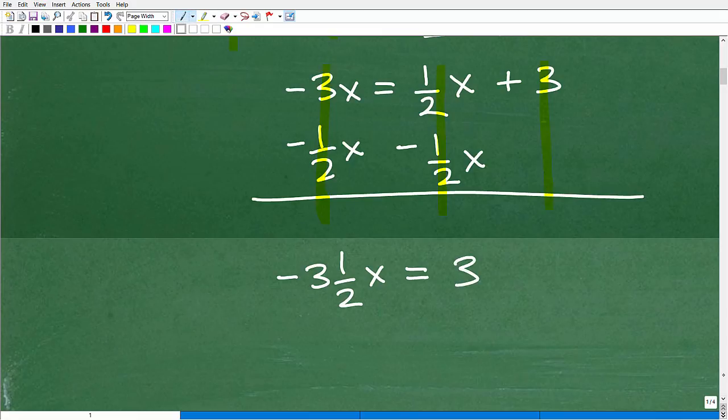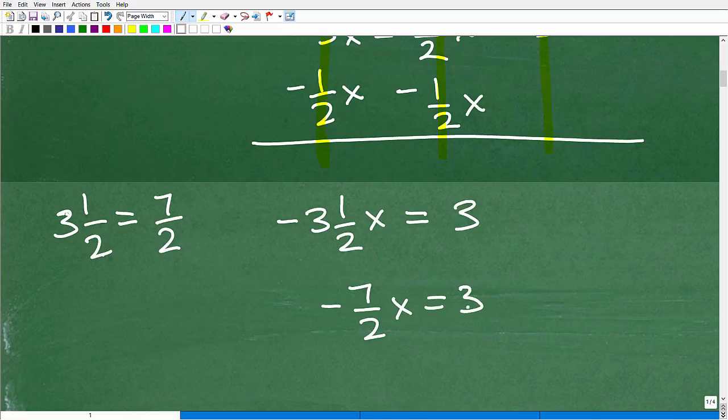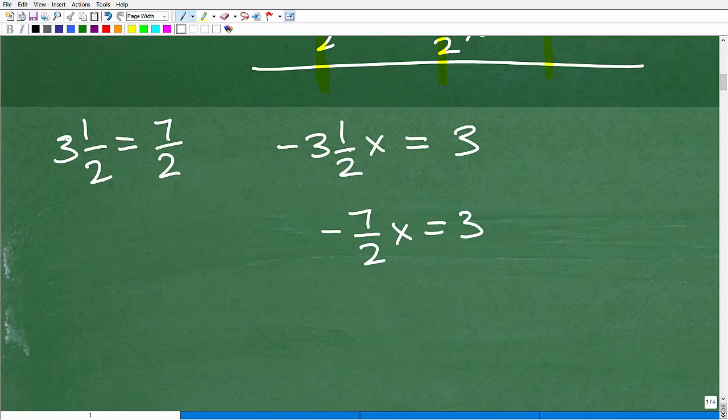All right. So we're almost there. Can you solve this basic equation? First of all, let's deal with this mixed number, 3 and 1 half. How do we express this? This is a mixed number fraction. Let's write this as an improper fraction. So we're going to go 2 times 3 is 6 plus 1 is 7 over 2. So the equivalent problem here is going to be negative 7 halves x is equal to 3. When you're dealing with fractions, mixed fractions in algebra, turn them into improper fractions.